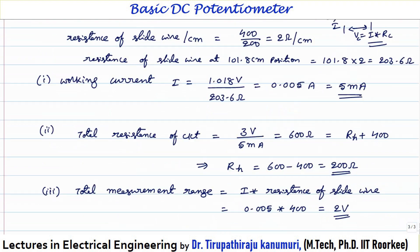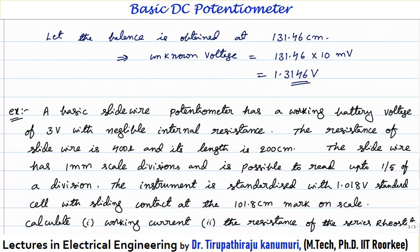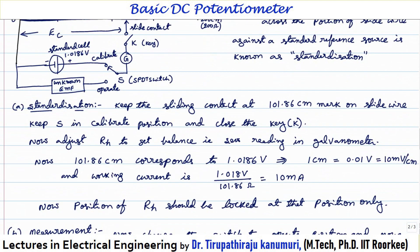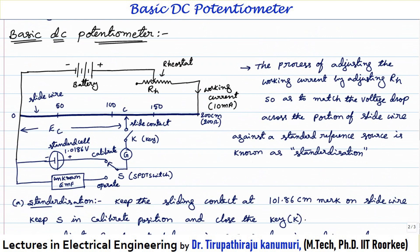I hope the basic working principle of the potentiometer and how to analyze basic numericals on the basic potentiometer is clear to you. Practically, the problem comes because the slide wire length is nearly 200 centimeters, making the size of the potentiometer very large. It is impractical to design such a large potentiometer — it should be compact — so practically the potentiometer will be a little different, and we will discuss that in the next class. If you still have any queries, you can leave your comments in the comment section below. Thank you very much.